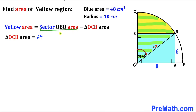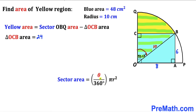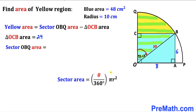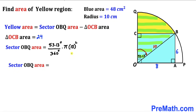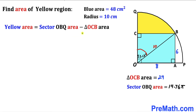Now we calculate the area of sector OBQ using the formula: area = (θ / 360°) × π r². With θ = 53.13° and r = 10, we get area = (53.13 / 360) × π × 100 = 14.76π.